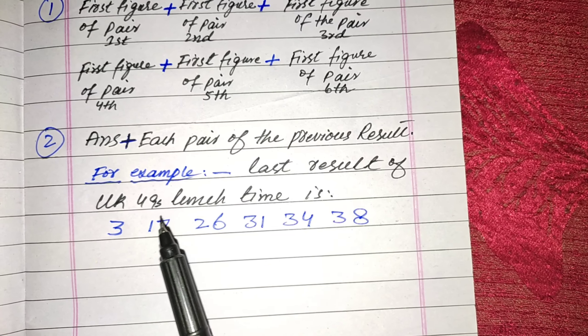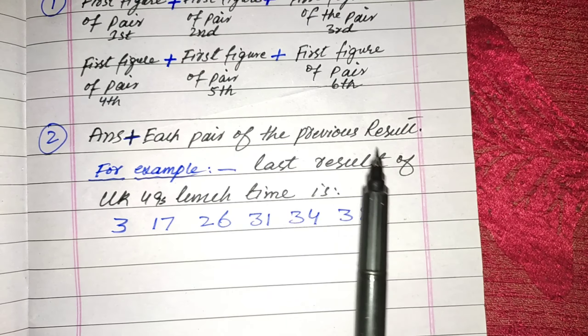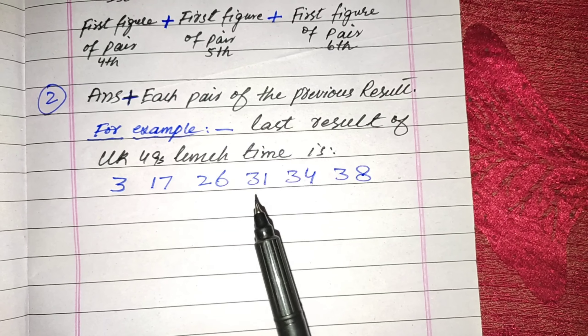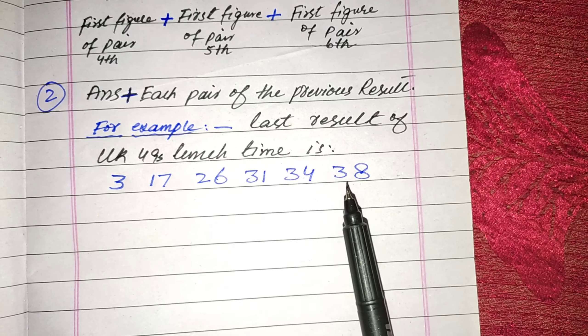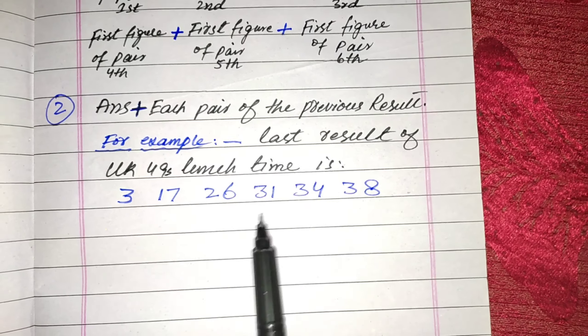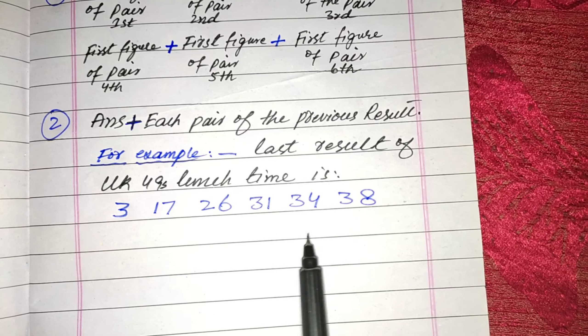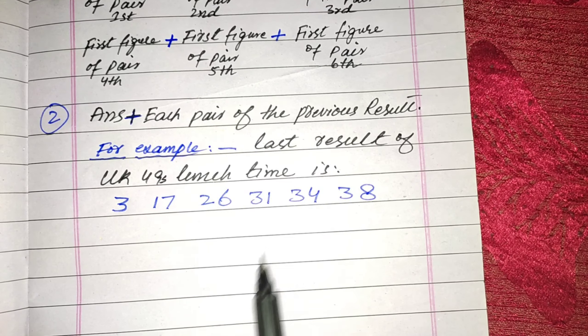it is the last result of UK49 lunchtime: 3, 17, 26, 31, 34, and 38. Now apply this formula on this result for your better understanding.